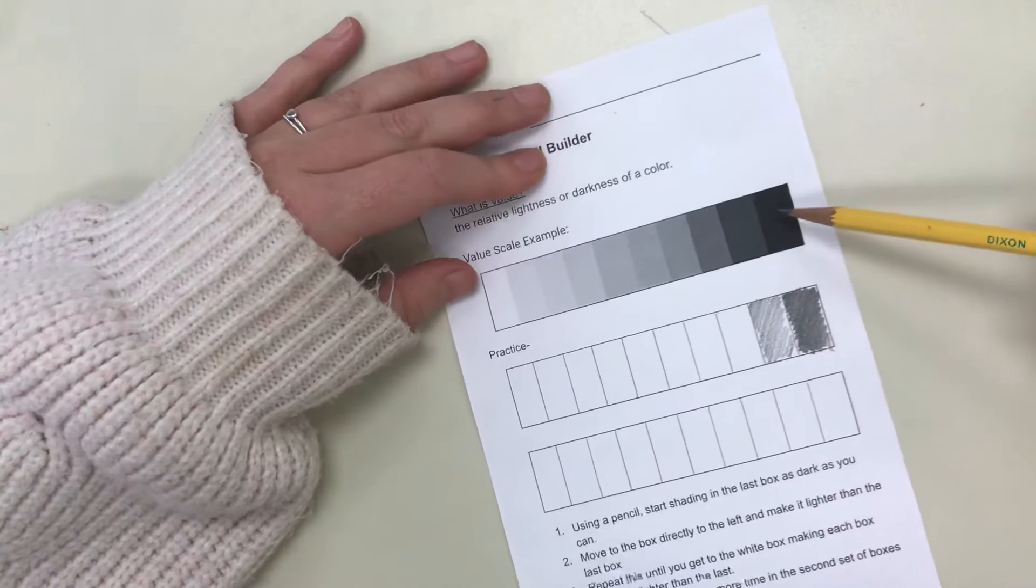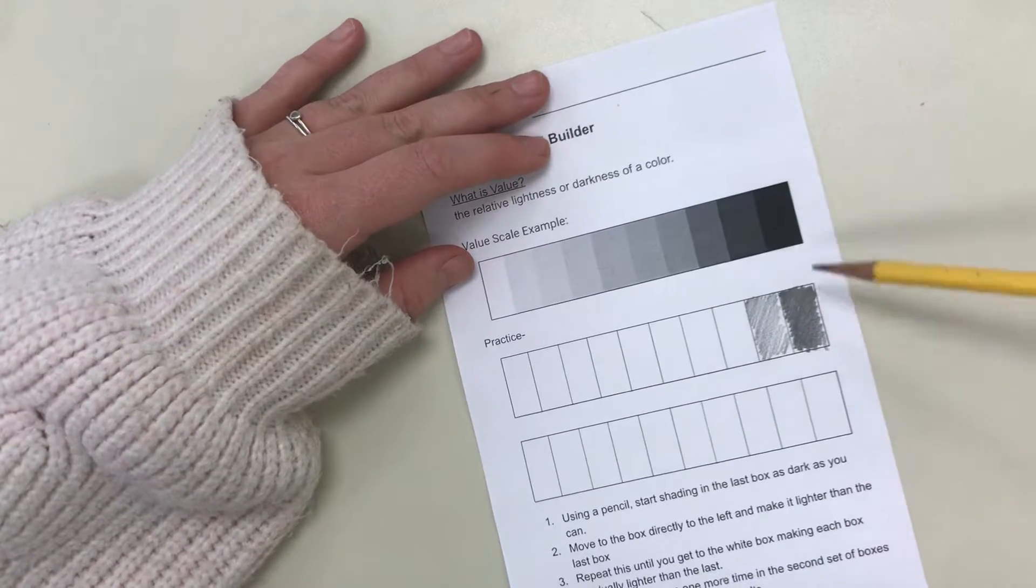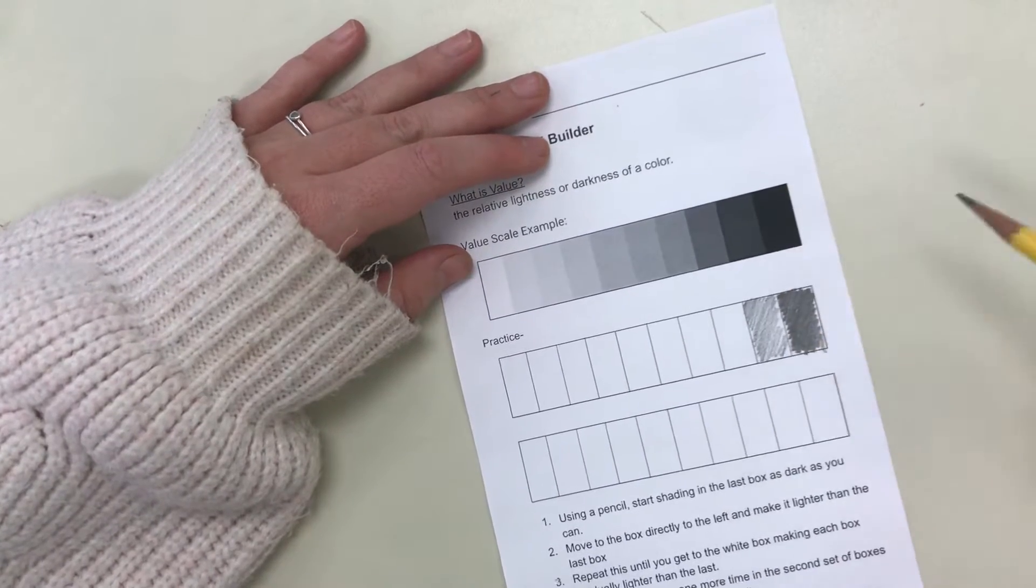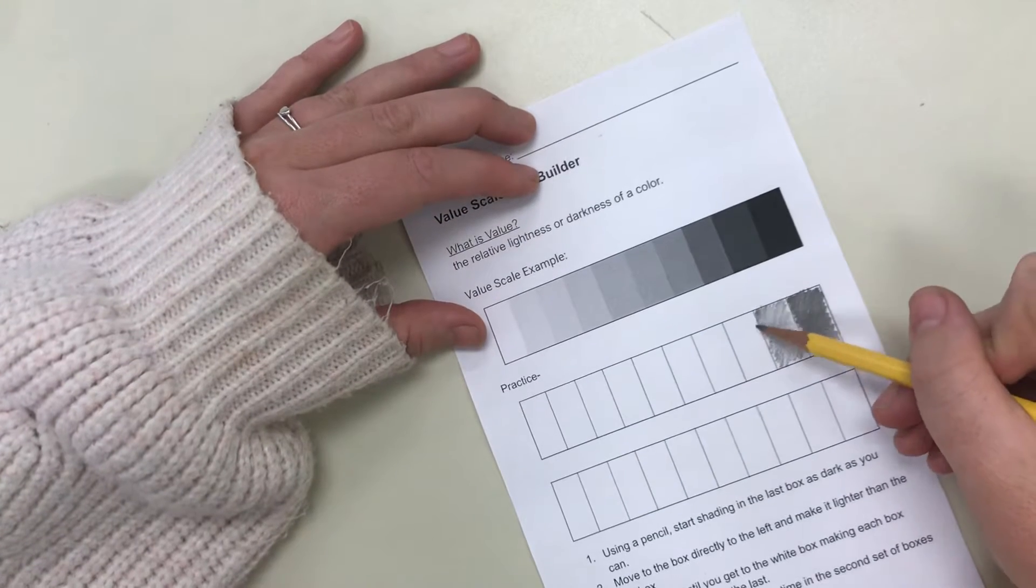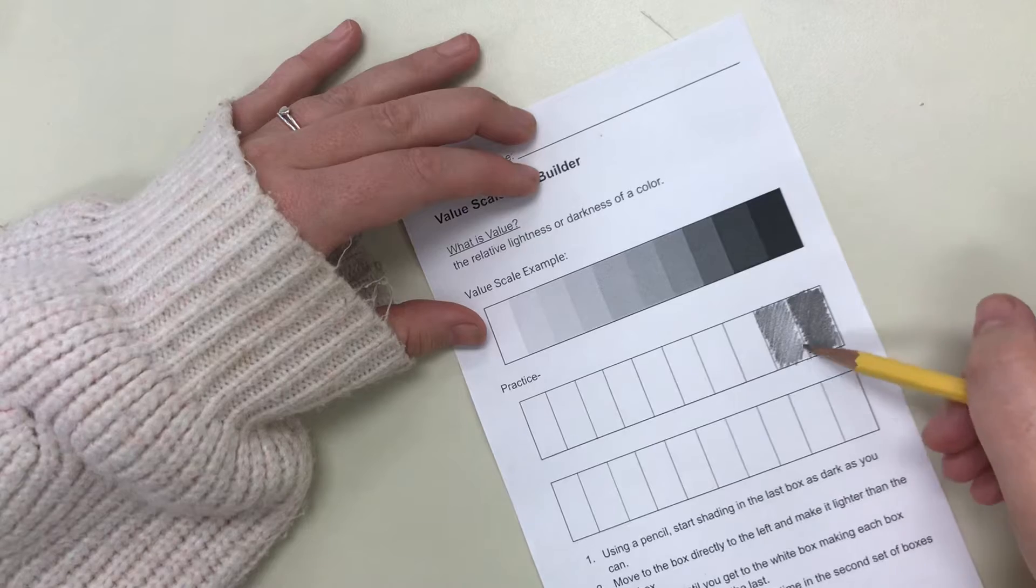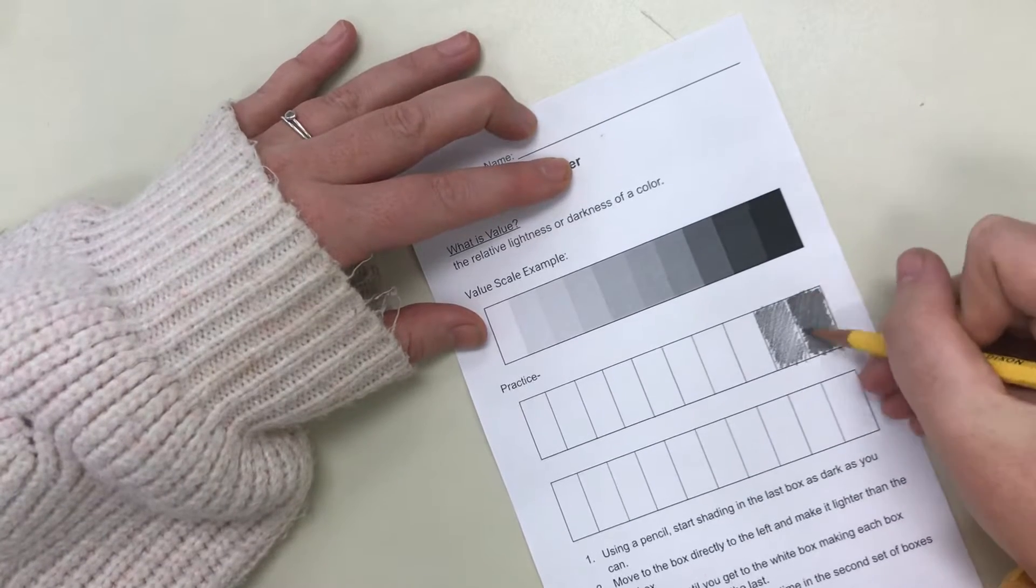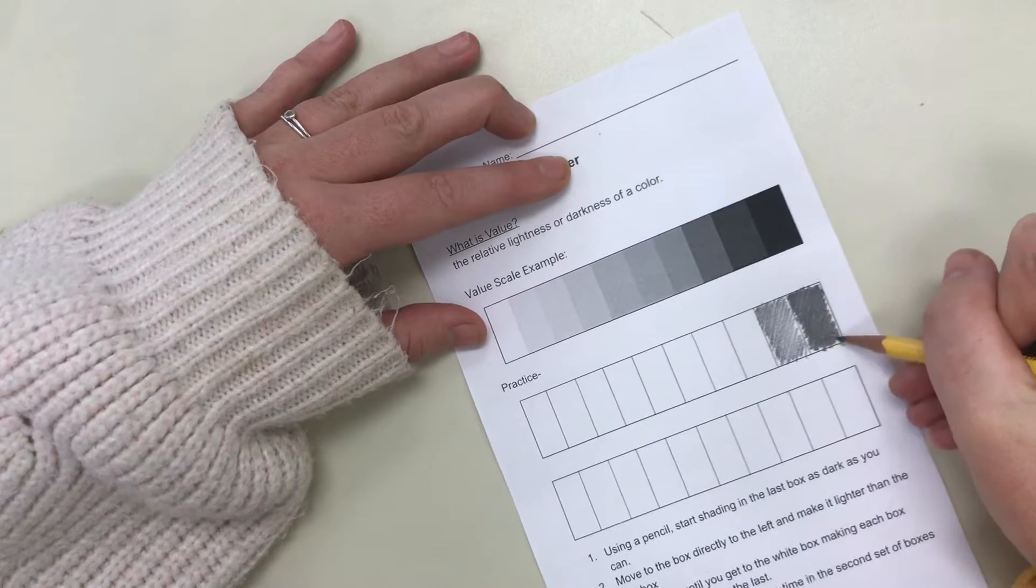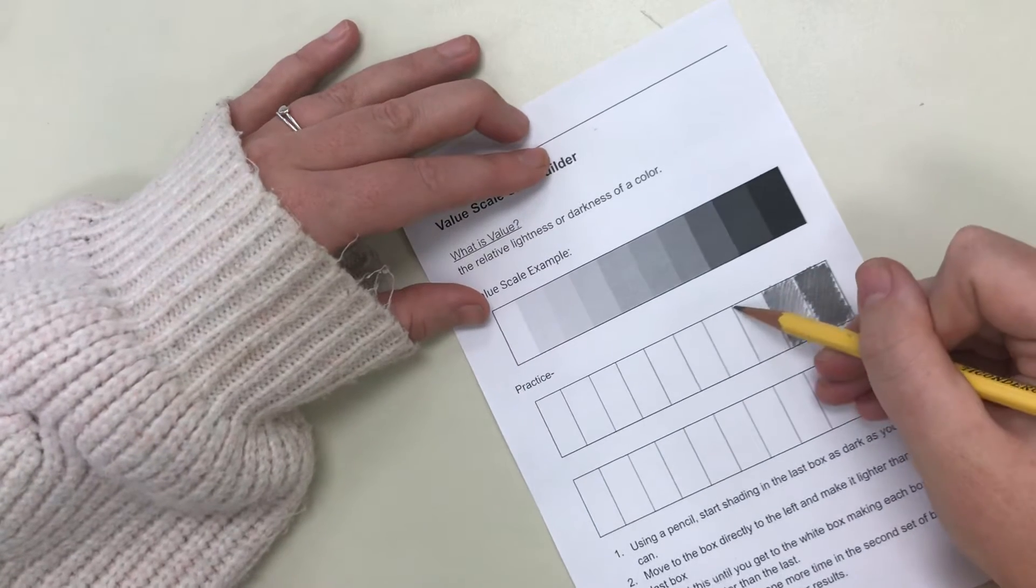I also have this value scale right above at all times to look back so I might see that my second one is still pretty light. So I need to go back and make it darker and then I might have to go back even one more time over my darkest square and see if I can get that just a tad darker. Then I keep moving on.